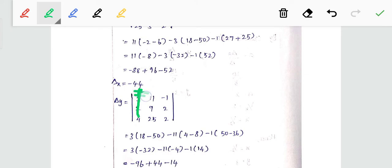18 minus 50. Then next is minus 11, corresponding row column: 4 minus 8. Then next is plus into minus 1, corresponding row column: 50 minus 36.